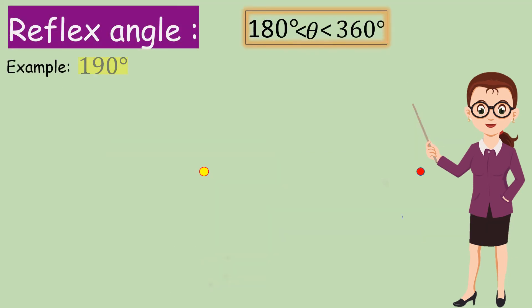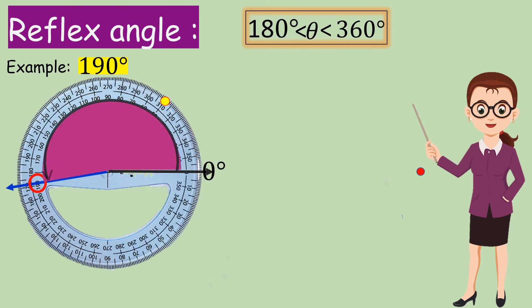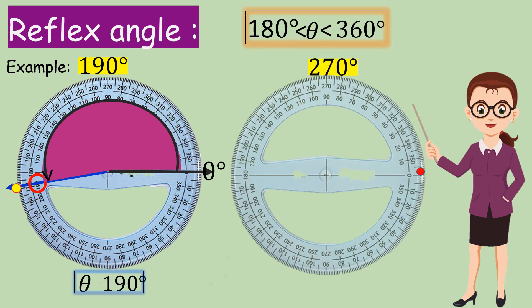Reflex Angle: An angle which measures more than 180 degrees and less than 360 degrees is called a Reflex Angle. Examples: 190 degrees, 270 degrees.